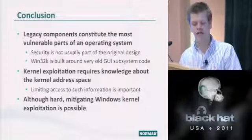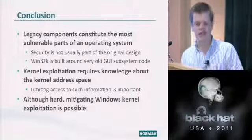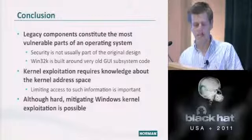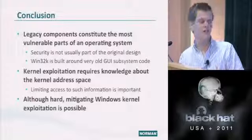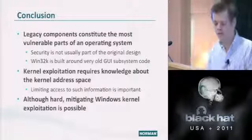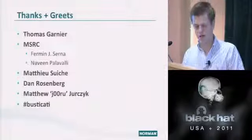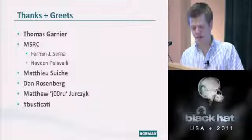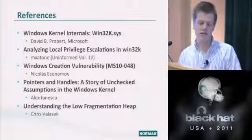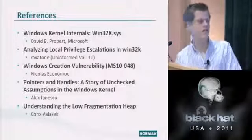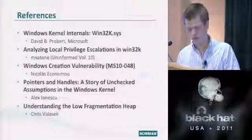Kernel exploitation requires knowledge about the address space, so limiting available information is important — we've seen this done on Linux but not much on Windows. Although difficult without source code access, mitigating Windows kernel exploitation is definitely possible. Thanks to MSRC for being really cool about all these bugs. For further reading, especially on the kernel heap, check out Chris Valasek's paper on the low fragmentation heap, which contains all the information you need for heap manipulation.